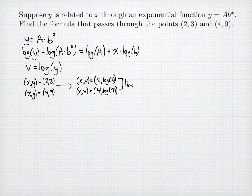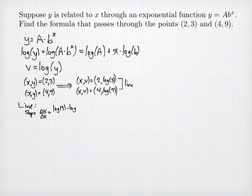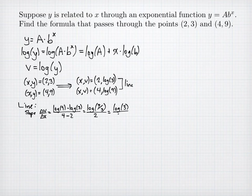In this scale these points are on a line, so we find the slope: change in v over change in x equals (log 9 minus log 3) divided by (4 minus 2). Using log properties, the numerator becomes log(9/3) = log 3, and the denominator simplifies to 2, giving slope = log 3 / 2. In this problem that slope is the logarithm of the base b.